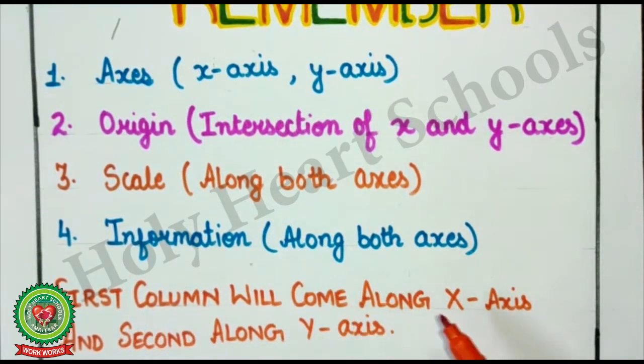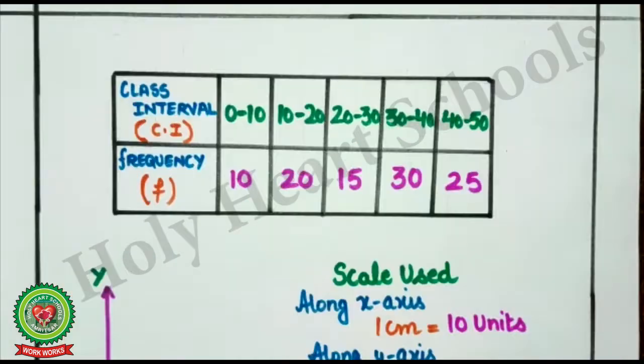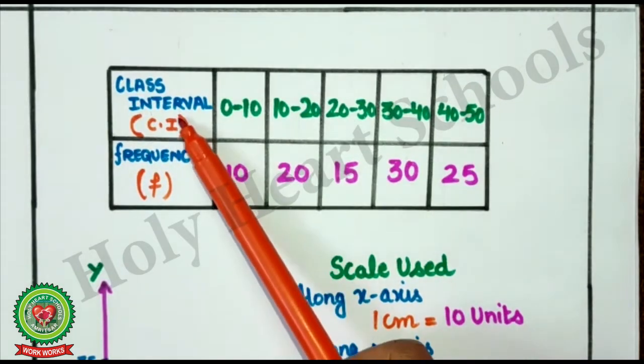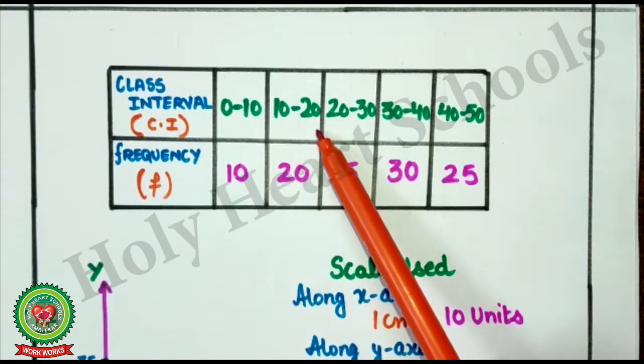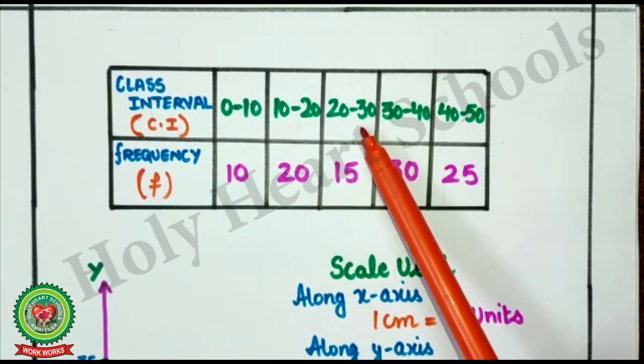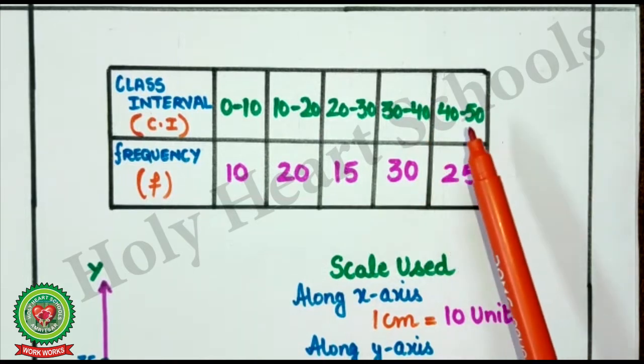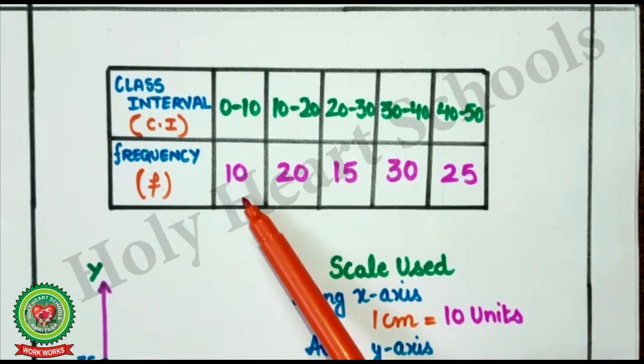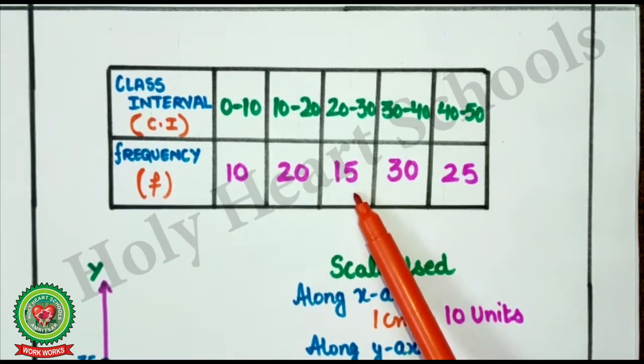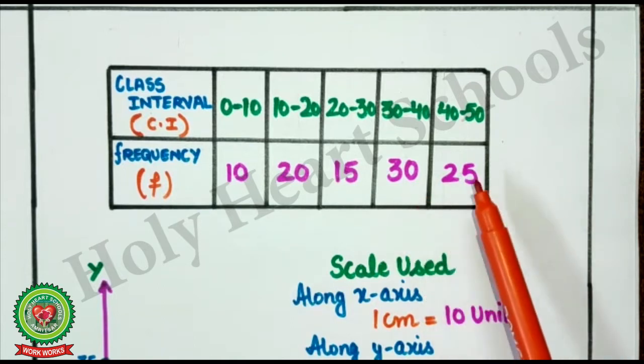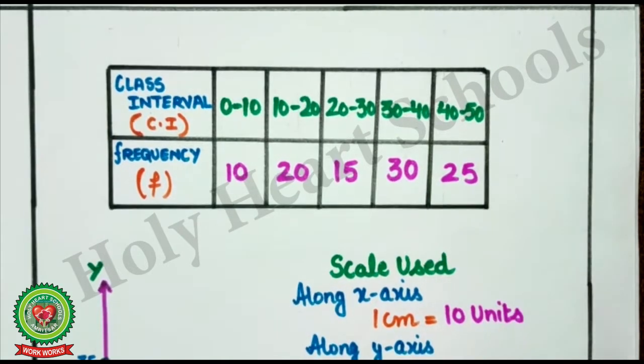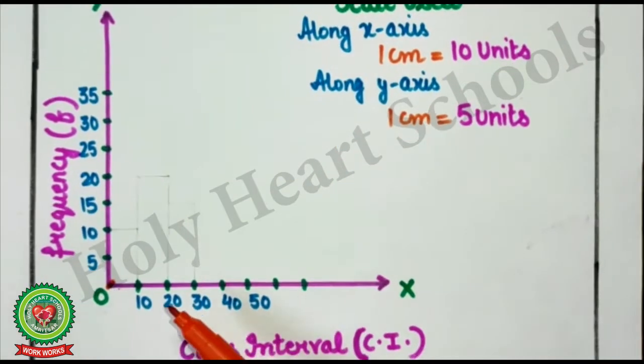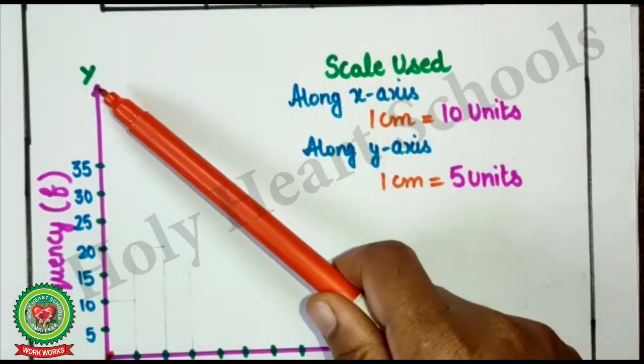First column will come along X-axis and second along Y-axis. Now let's start with examples. Here, class interval given 0-10, 10-20, 20-30, 30-40, 40-50. And frequency is given 10, 20, 15, 30, 25. Now, first of all, we will draw X-axis and Y-axis.